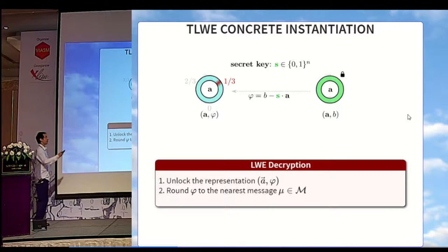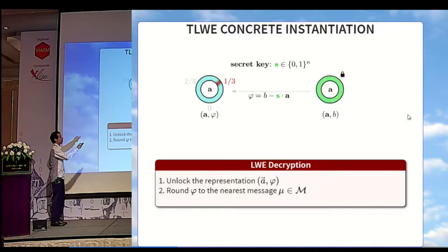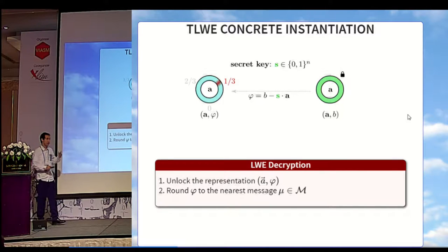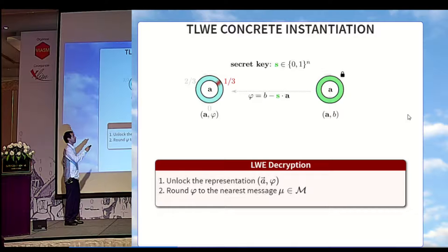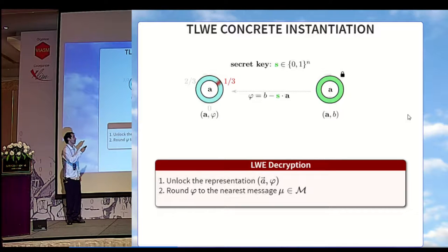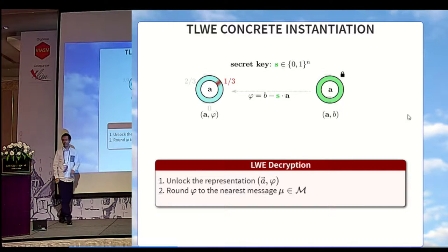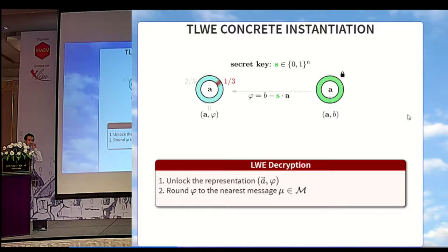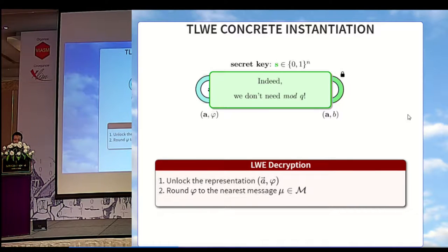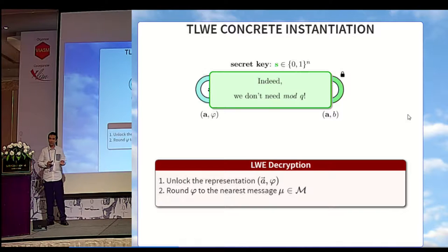The ciphertext is entirely computationally indistinguishable from a random vector based on a direct worst-case to average-case reduction. To decrypt, we recompute the phase phi = b - s·a and retrieve our original sample from this distribution. All we need to do to recover the message is to round this sample over our discrete message base. When you look at this picture, there is another way of recovering the message: if you have access to the distribution, you can simply take the expectation, which will also be one-third. The advantage of the expectation is that it is linear and continuous, which is much easier to use in proofs. In this presentation, I didn't use the Q parameter at all, which I personally view as a huge improvement.